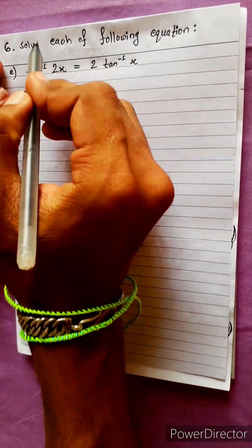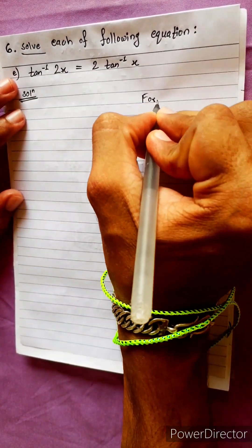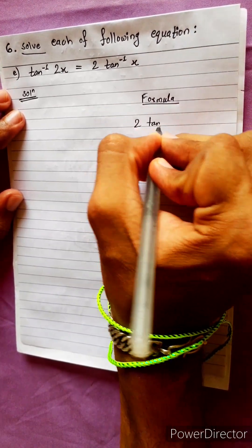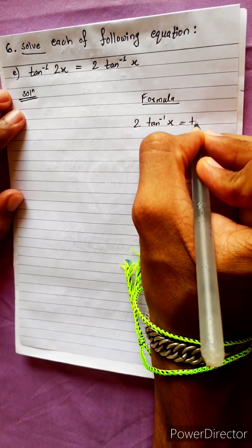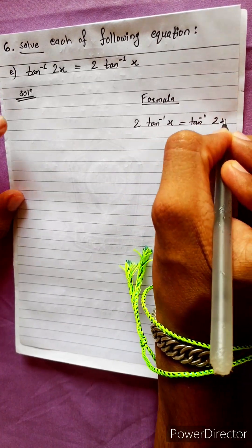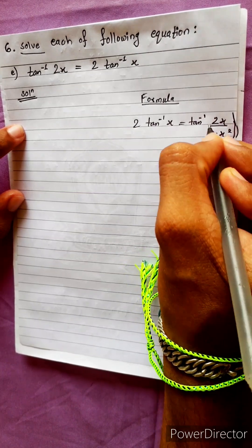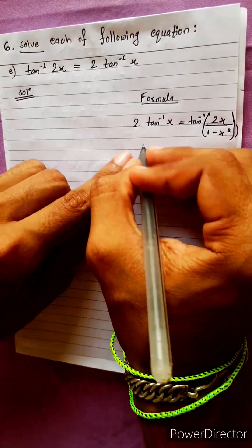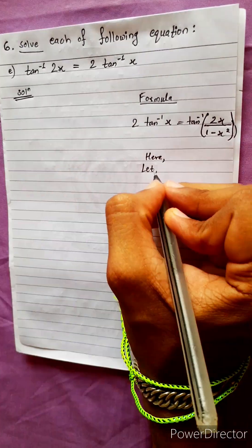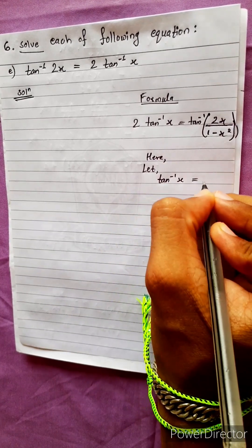This formula will be very easy to solve the problem. The formula is: 2 tan inverse x equals to tan inverse 2x by 1 minus x squared. This formula will be very easy to solve the problem.